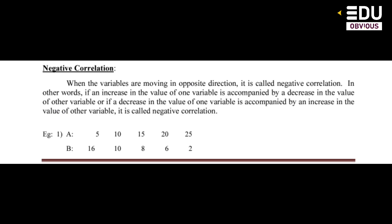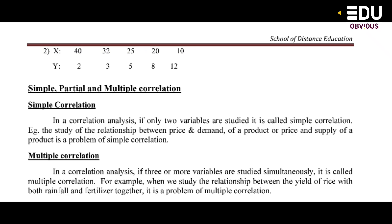In the figure example: A is 5 and B is 16; A is 8 and B is 20 decreased; A is 25 and B is 2 — moving in opposite directions. Another example: X is 40 and Y is 2; X is 32 and Y is 3; X is 25 and Y is 5; X is 5 and Y is 4. This is negative correlation.